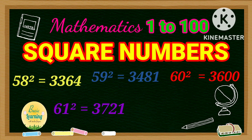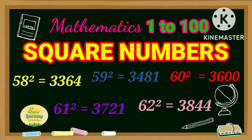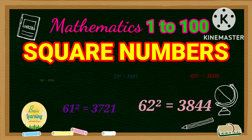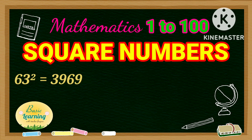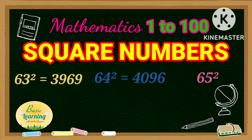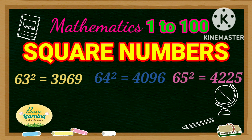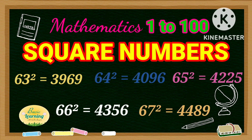Square of 61 is 3,721. Square of 62 is 3,844. Square of 63 is 3,969. Square of 64 is 4,096. Square of 65 is 4,225. Square of 66 is 4,356. Square of 67 is 4,489.